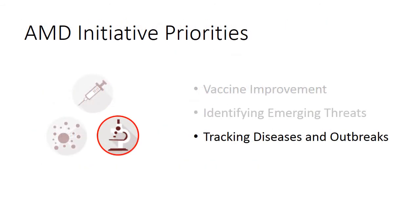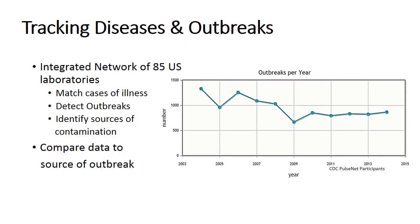Now Lisa will tell us how AMD can be used for tracking diseases and outbreaks. Over 85 U.S. public health, regulatory, and agricultural laboratories use a standardized DNA subtyping method on disease-causing bacteria. The scientists upload data onto state and national databases, which allows them to match cases of illness, detect outbreaks, and identify sources of contamination.